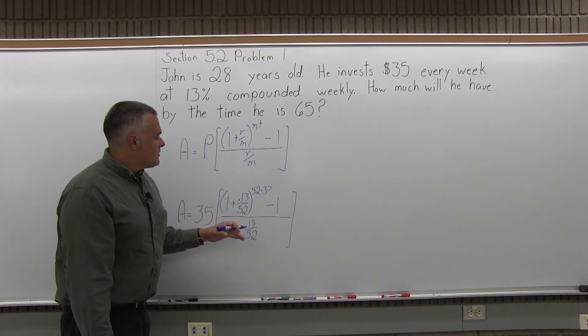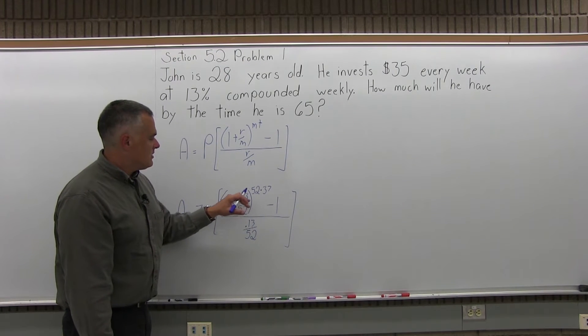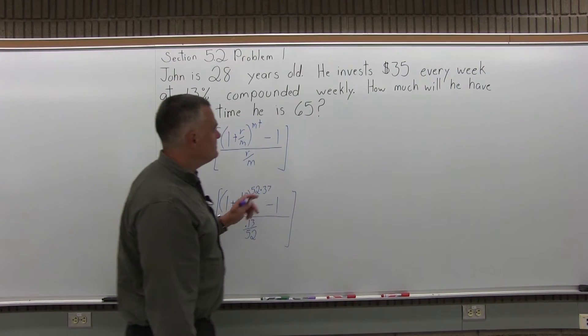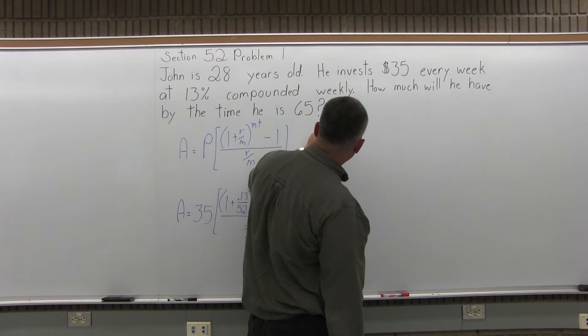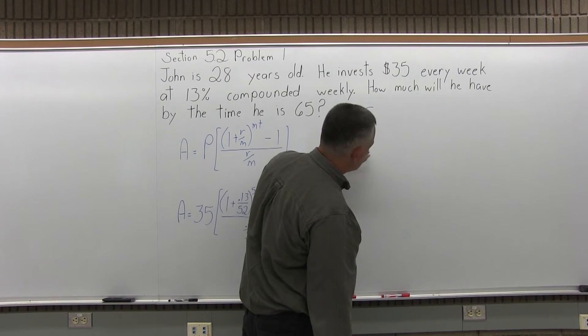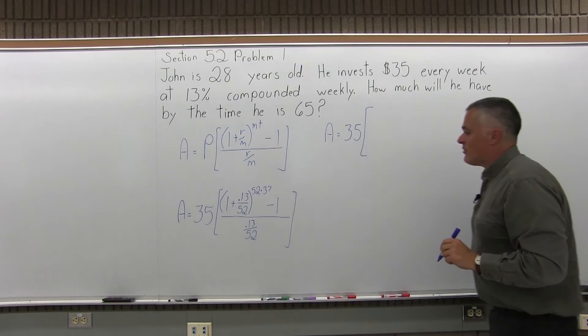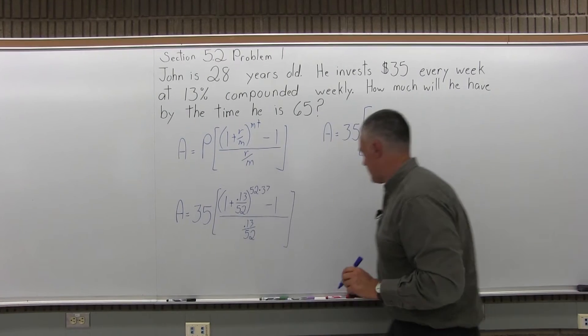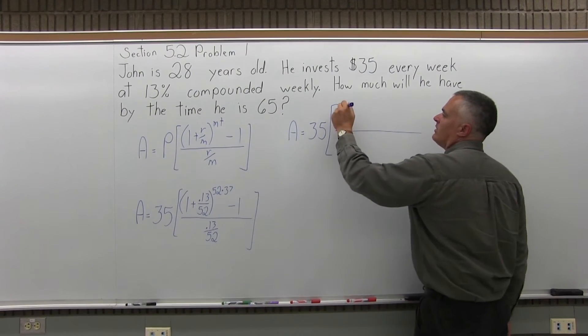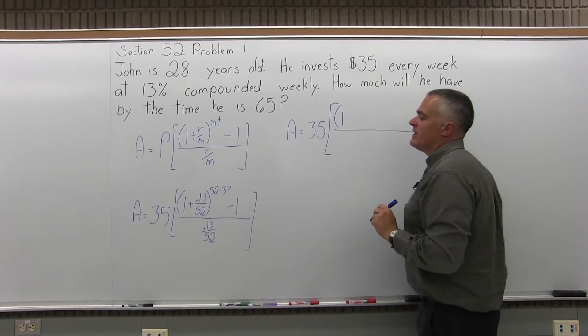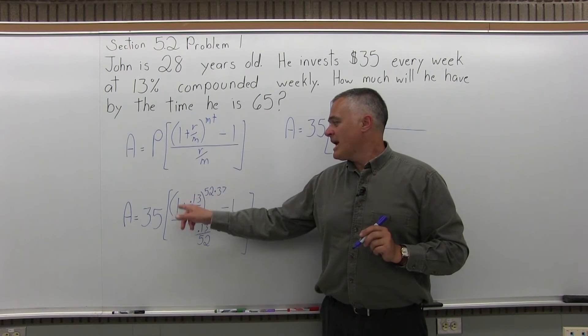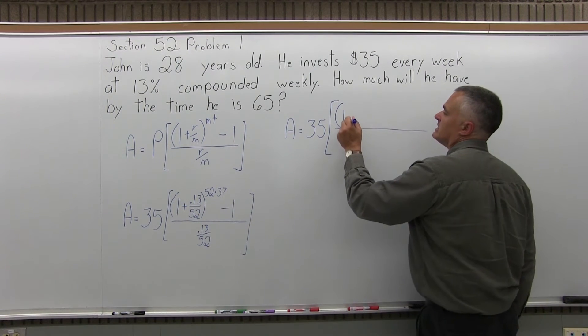So let's start working out the computation. I'll clean up the parentheses a little bit, calculate my exponent and start working this down. So A equals 35 times some brackets. Now in the brackets, I know I'm going to need my calculator. In the brackets we have 1 plus .13 divided by 52, that's .0025, and I'm going to add 1 to it so it's going to be 1.0025.